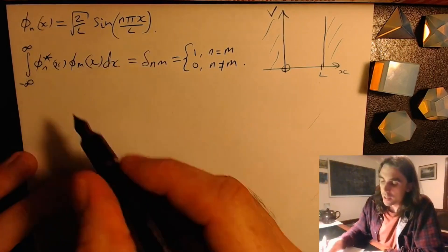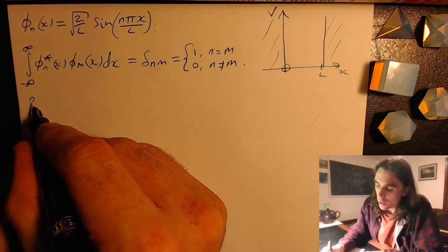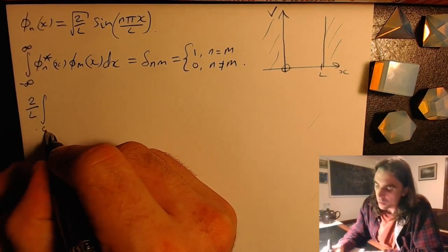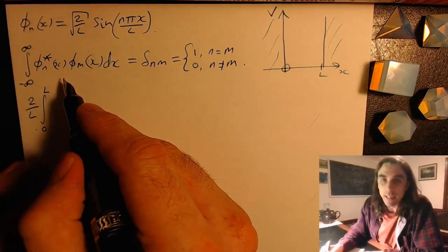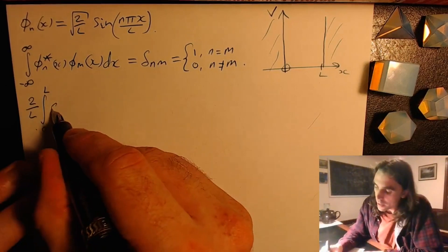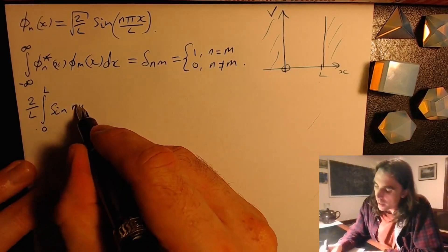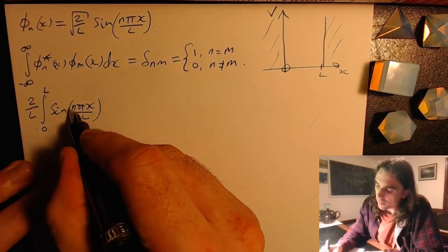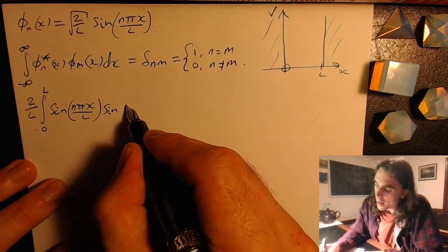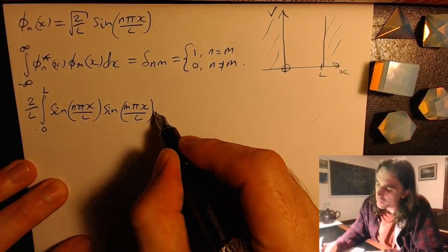let's just substitute this expression into here. So we get 2 over L out the front. Our integral only goes from zero to L because phi is zero outside of that range. Sine n pi x over L, sine m pi x over L dx.